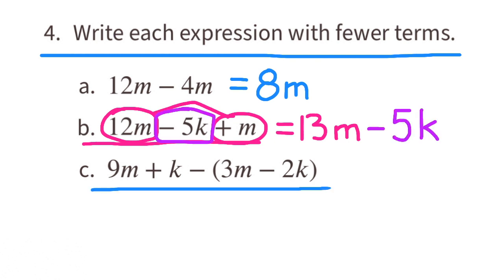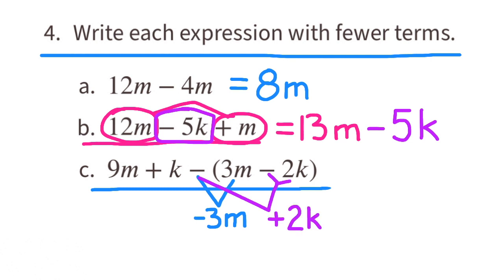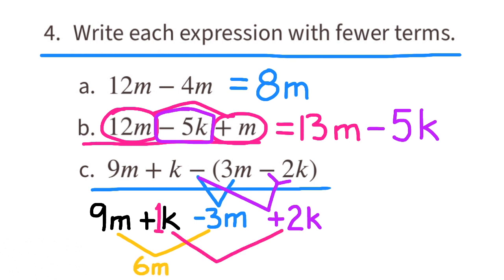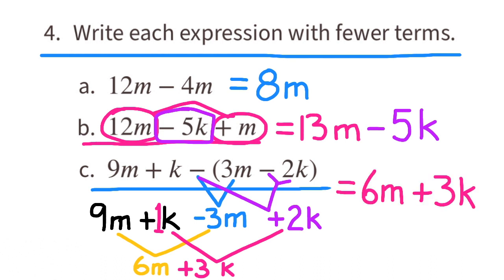C: 9M plus K minus (3M minus 2K). The minus sign applies to both terms in the parentheses, so 3M becomes negative 3M and negative 2K becomes positive 2K — it's the opposite of negative 2K. Now combining like terms: 9M minus 3M is 6M, and 1K plus 2K is 3K. The expression simplifies to 6M plus 3K.